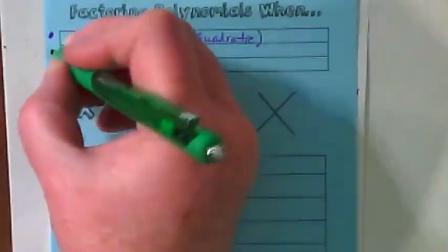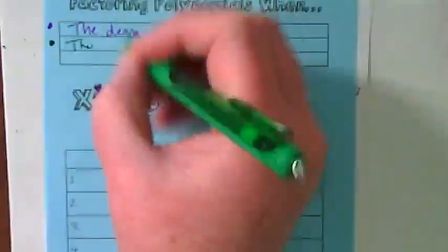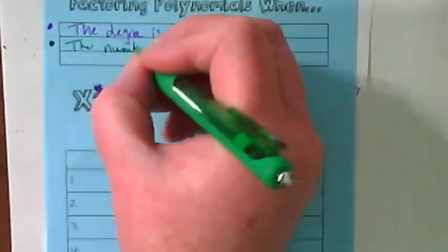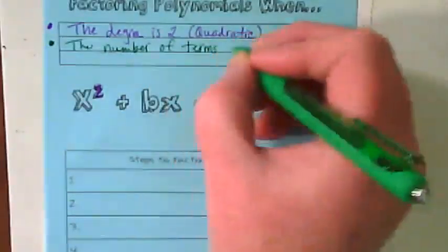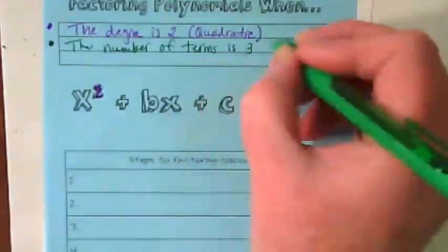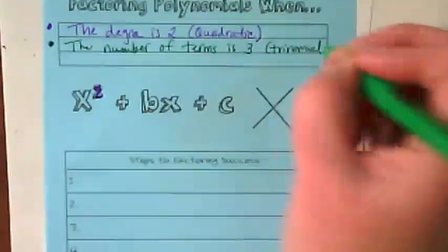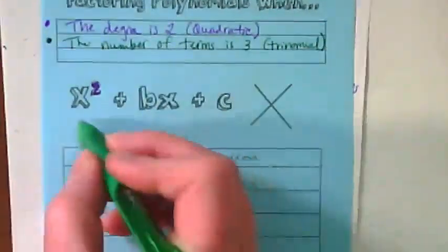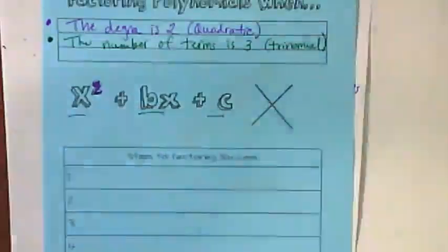The second factor that makes this possible to follow this set of steps is the number of terms is three, meaning it's a trinomial. Notice here, one, two, three terms.